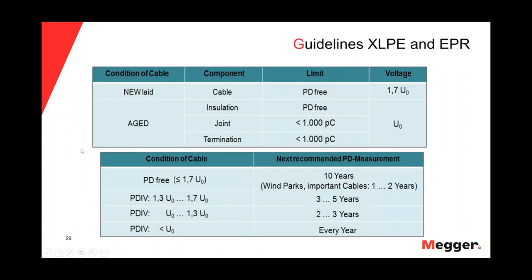We have guidelines for the partial discharge test. For aged cables in a maintenance partial discharge test, the insulation must be PD-free. In a maintenance test, we should have no partial discharge in the insulation of the cable. But for splices and terminations, we can allow up to less than 1,000 picocoulombs for aged cable splices and terminations. We have different guidelines that we can use to make a decision after performing a partial discharge test.